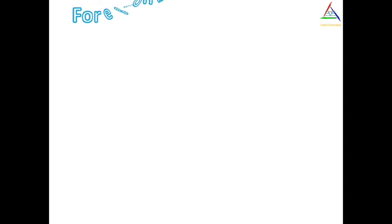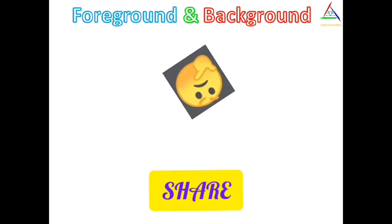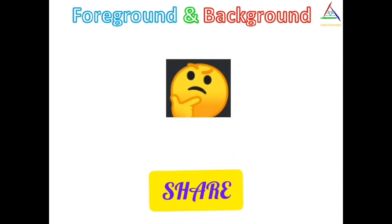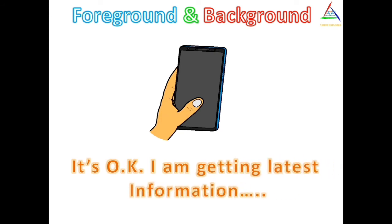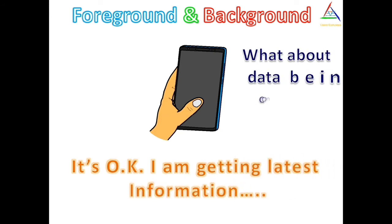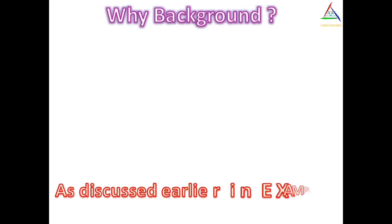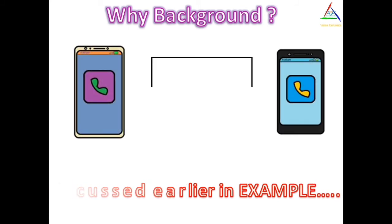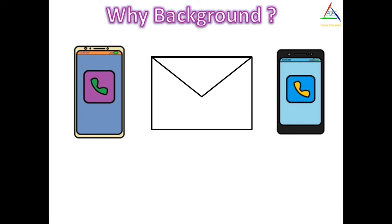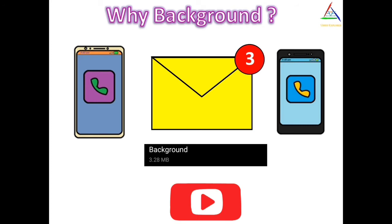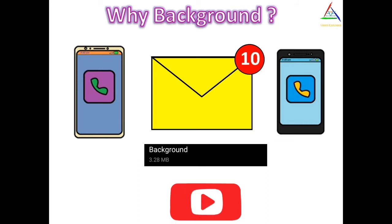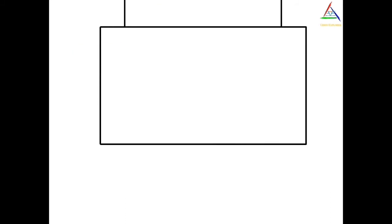You may think it's okay that when you are using the app it's taking data to provide you the latest information — that's why data is consumed in foreground. But what about the data being consumed in background? The simple answer is that the data consumed in background is used to notify you about the latest messages or any other information which comes up on your device.